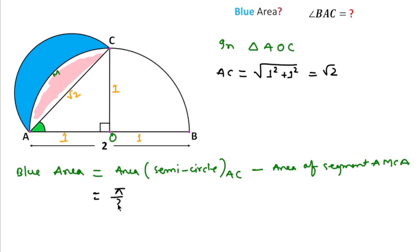π over 2 R squared, where R is (√2)/2, so (√2/2)² minus area of this segment. Area of this segment will be area of quadrant AMCAO minus area of triangle ACO.